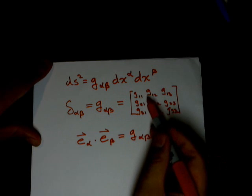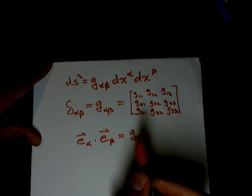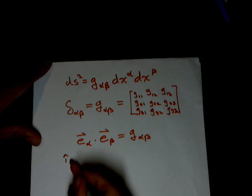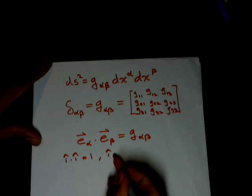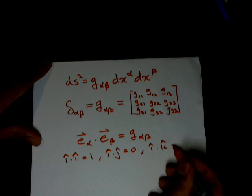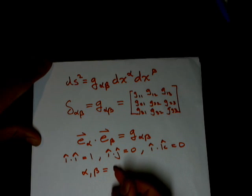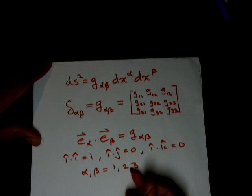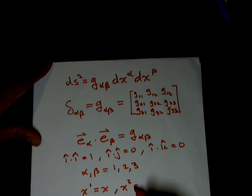As a quick example, let's look at these components. If you remember the dot product, when they're perpendicular it's equal to zero. So i dot i equals one, i dot j equals zero, and i dot k equals zero. Alpha and beta are going to range between values one, two, and three. In our notation, x¹ equals x, x² equals y, and x³ equals z.